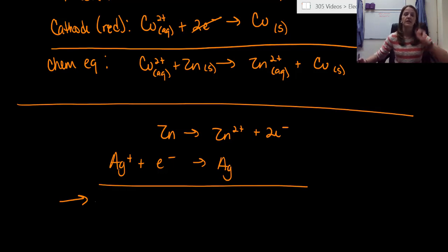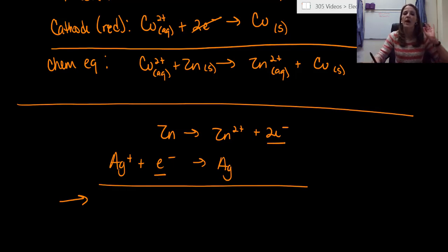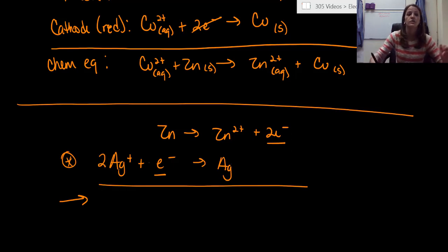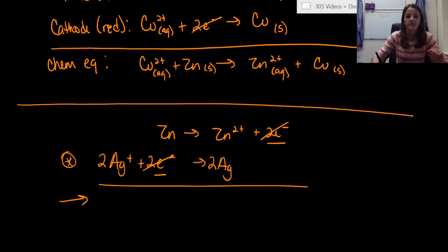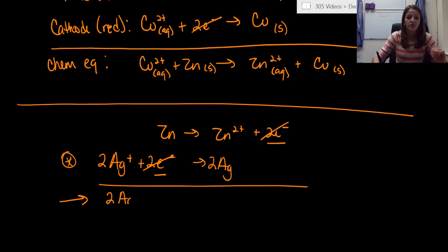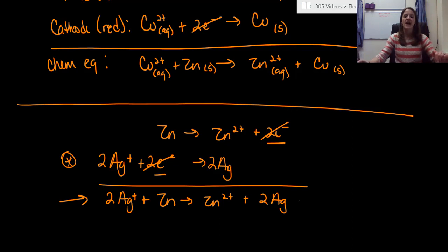Always check if electrons cancel first. You see two electrons on the product side but only one on the reactant side — red flag. Multiply the silver equation by two: 2Ag+ plus two electrons goes to 2Ag zero. Now electrons cancel. Zinc zero and zinc 2+ don't cancel; 2Ag+ and 2Ag zero don't cancel. So the overall equation is: 2Ag+ (aq) + Zn (s) → Zn 2+ (aq) + 2Ag (s).